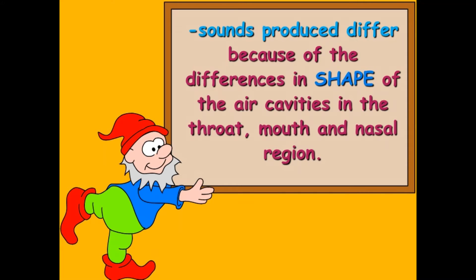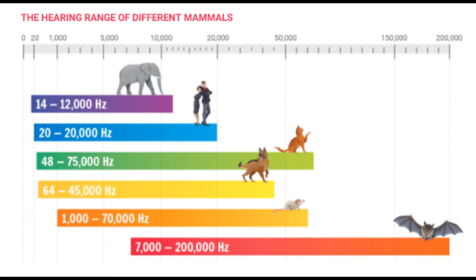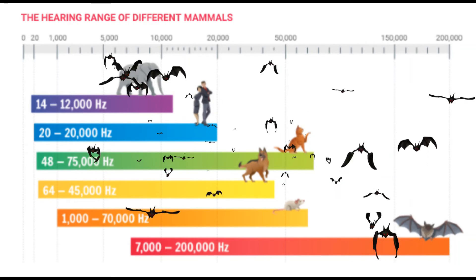Vocal sounds vary from human to human because of the different shapes of air cavities in the throat, mouth, and nasal region. You already know ears are our sensory organs of hearing. When the eardrum vibrates according to the sounds and sends the message to the brain by nerves, the brain can identify the sound. Human ears can hear sounds only between 20 Hz to 20,000 Hz frequency range. But some animals can hear more than that.